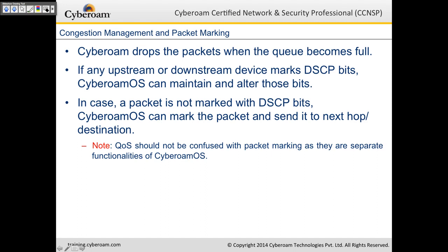CyberROM does congestion management and packet marking. CyberROM drops packets when the queue becomes full. If any upstream or downstream device marks DSCP bits, CyberROM OS can maintain and alter those bits as well. For example, if your VoIP provider marks traffic with a specific DSCP class — like class 16 or bronze class — CyberROM can retain those marking bits. In cases where a packet is not marked with DSCP bits, CyberROM OS can mark the packet and send it to the next hop or destination.